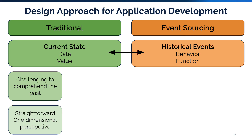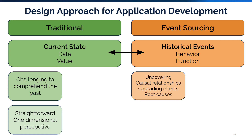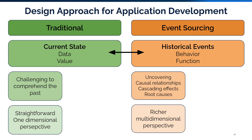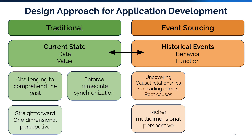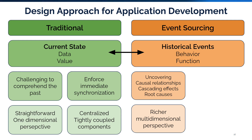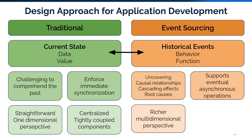On the other hand, since event sourcing leverages past events in its modeling, it helps uncover causal relationships, cascading events, and root causes with greater clarity than the current state approach. This method offers a richer and multidimensional perspective on data, leading to enhanced insights. Additionally, the current state approach commonly leads developers to design applications that enforce immediate synchronization. To achieve this, most data and behaviors are often centralized, which poses little issue in simple systems. However, as the system's responsibilities expand, this often results in tightly coupled components. Conversely, the event sourcing approach reliably stores all events, reducing the pressure on applications to synchronize immediately. This approach supports eventual and asynchronous operations that are completed at a later date, at a more convenient time. As a result, components can be less centralized, more distributed, and loosely coupled.